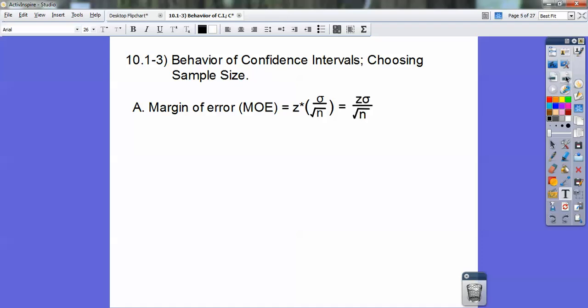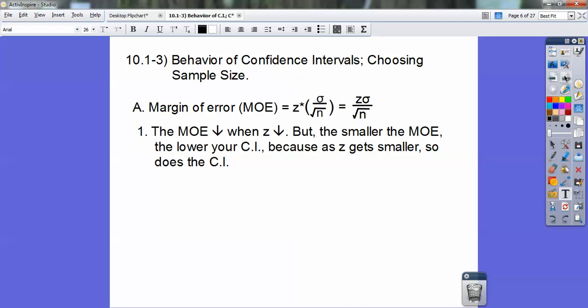Which just equals Z times the standard deviation divided by the square root of n, that's your margin of error. And the margin of error decreases when the Z score decreases, but the smaller the margin of error, the lower your confidence interval. Think of my hands getting closer and closer to each other as I'm spreading them out, and that's my margin of error, it's my confidence interval getting smaller. As the confidence interval gets smaller, so does your margin of error, because your Z gets smaller.